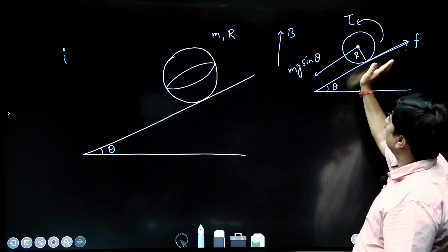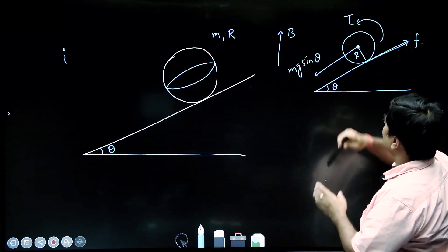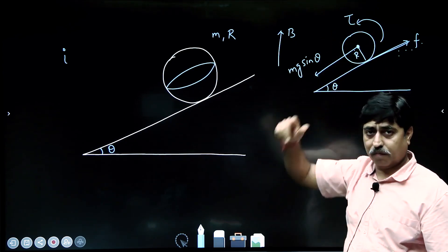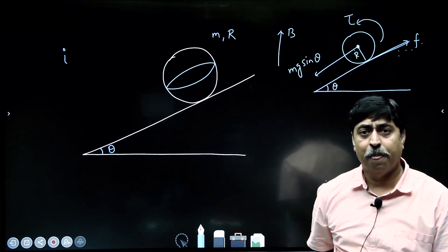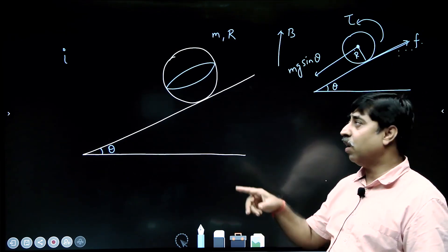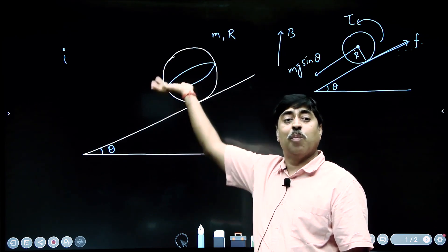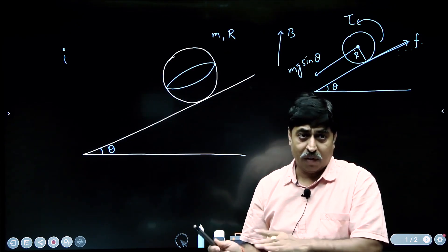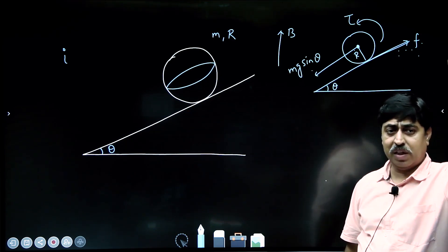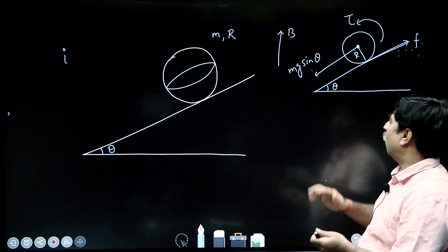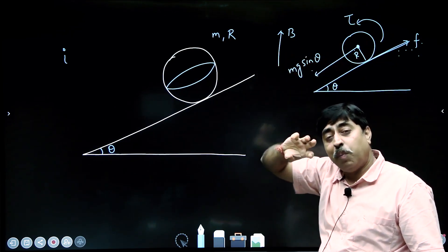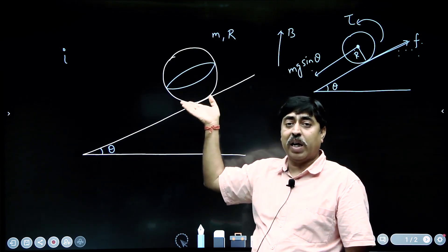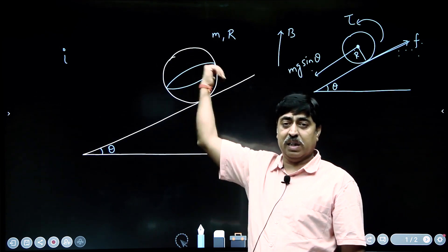The friction force is trying to rotate the sphere about this axis in a counter-clockwise sense. So the magnetic torque on the coil must be in the opposite direction and of the same magnitude. The magnetic force is zero, so for equilibrium: mg sin theta must equal the friction force F. The torque due to friction will be balanced by the magnetic torque. The direction of current must be such that the magnetic torque is in the clockwise sense.